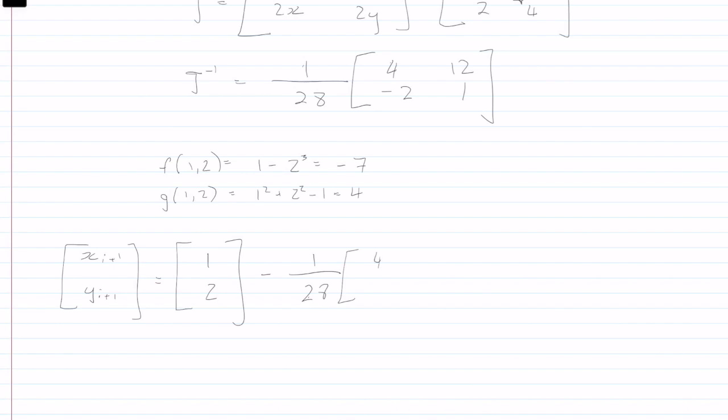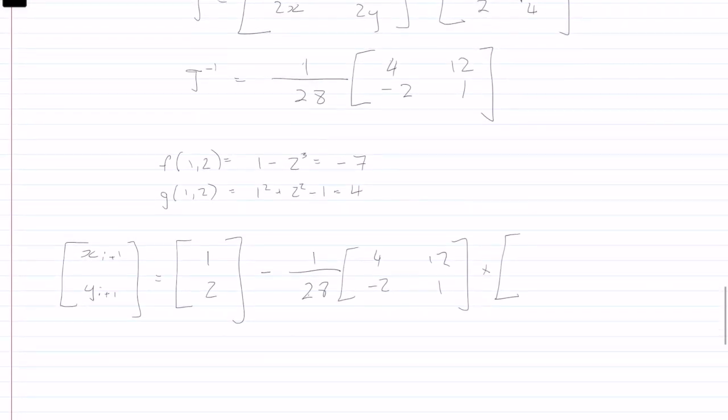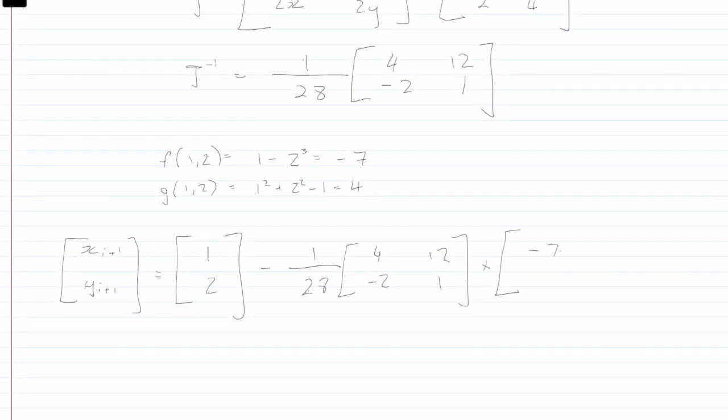minus the Jacobian, one over 28, four minus two, 12, one, multiplied by our function evaluated at the values, minus seven and four.